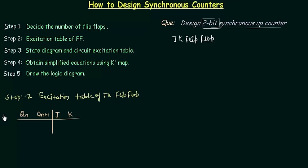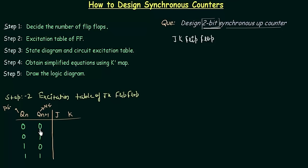As there are 2 inputs we have 4 possible conditions: 0,0 / 0,1 / 1,0 / 1,1. Depending on this we have to find J and K. When the present state Qn is 0 and the next state Qn+1 is also 0, this is possible when J is 0 and K is 0, or when J is 0 and K is 1. So we replace K with a don't care — K is the don't care in this case.